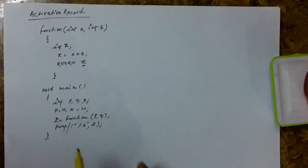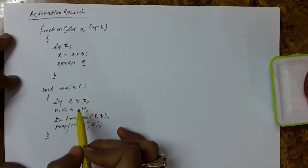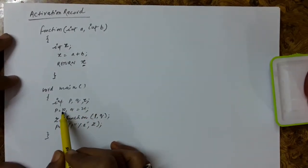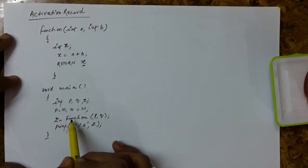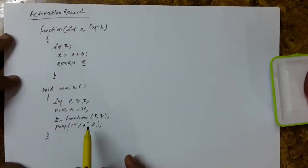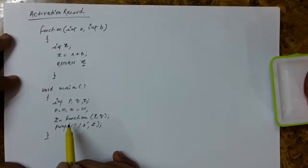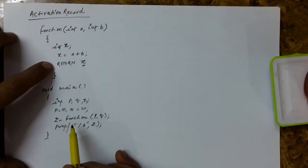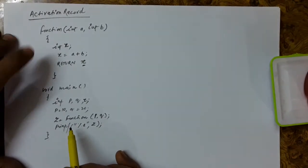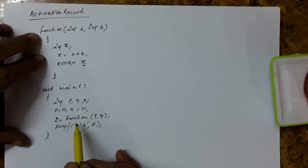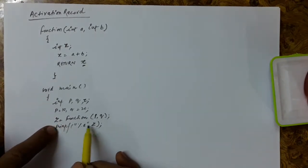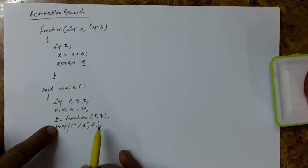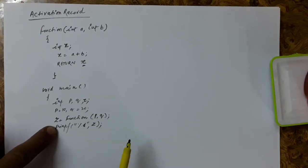In the main, you have actually called this function. In the main, there are variables p, q, and z. The initialized value of p is 10 and q is 20. Then you have called this function to add the values of p and q. After the function has finished, it has returned the sum of the two numbers, and that is stored in z variable, which is then printed by the print function.